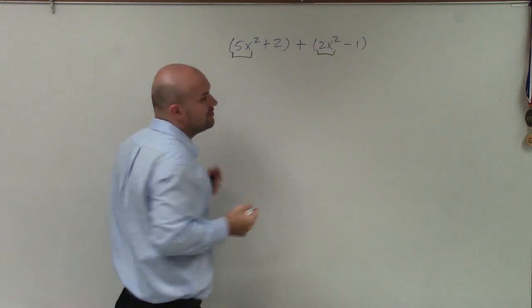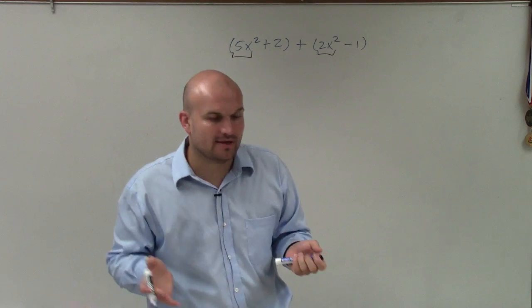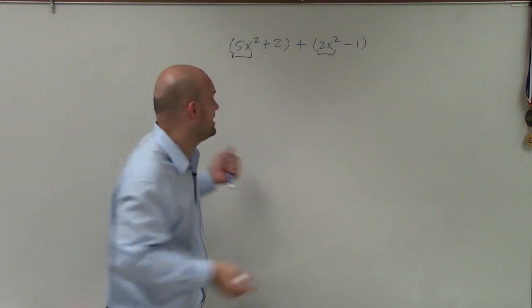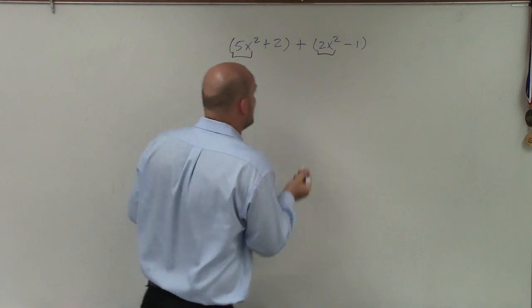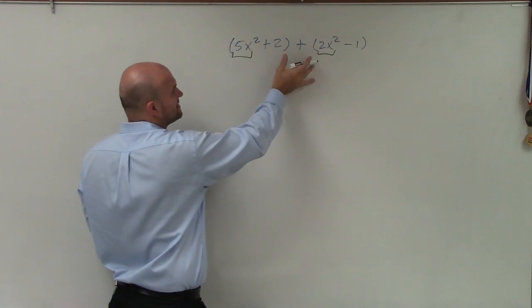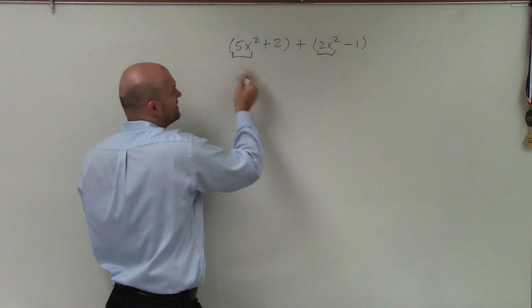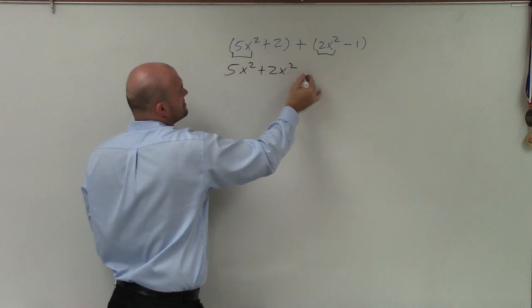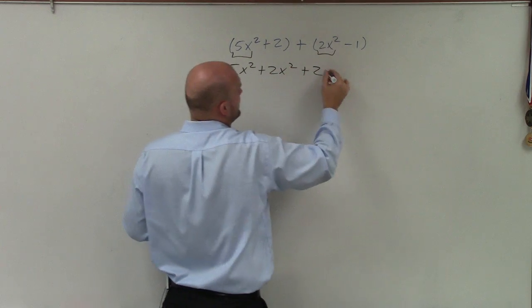But here, 2 and negative 1, those are just numbers. So we can go and combine those. So when I'm adding, all I simply do is what I like to do is just rewrite these. We don't really need the parentheses, but just rewrite it as 5x squared plus 2x squared plus 2 and then minus 1.